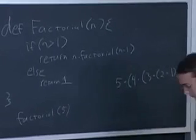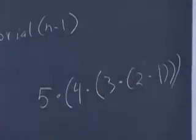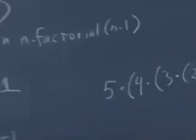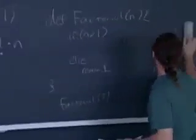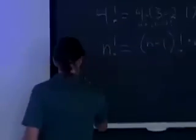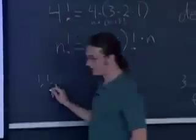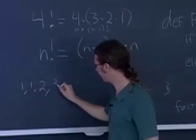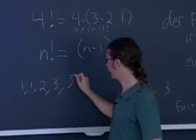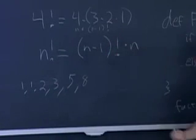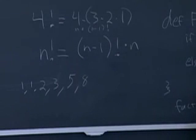So another simple example, which is sort of like the factorial, is the Fibonacci numbers, Fibonacci sequence. So the Fibonacci numbers, it goes 1, 1, and then the next one, you add the first two together. So it goes 1, 1, 2. 1 plus 2 is 3. 2 plus 3 is 5. And so on. 8. These are the Fibonacci numbers.